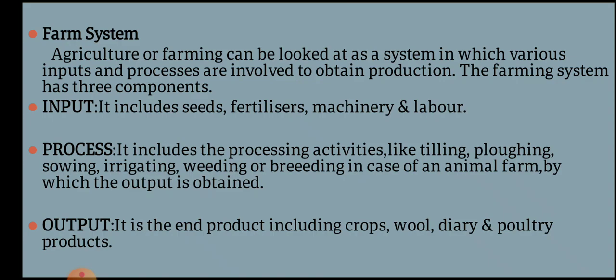What is the farming system? Agriculture can be looked at as a system in which various inputs and processes are involved to obtain production. The farming system has three components. The first component is input. Inputs include seeds, fertilizers, machinery, and labor.